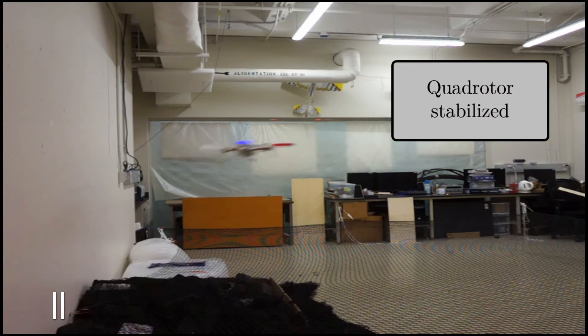As soon as this tracking has been achieved, the quadrotor reorients to a level attitude and stabilizes its altitude.